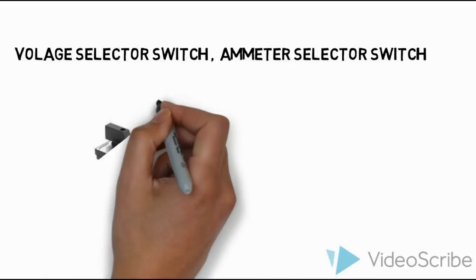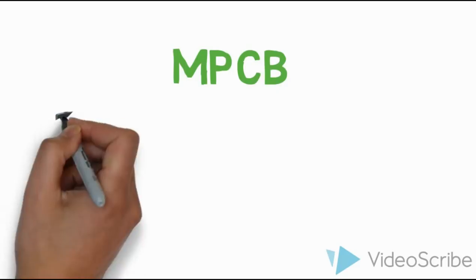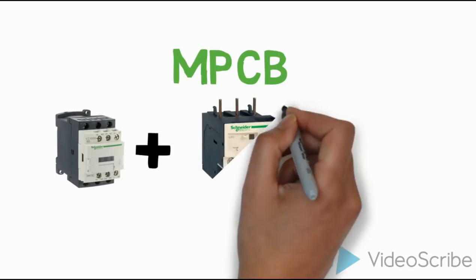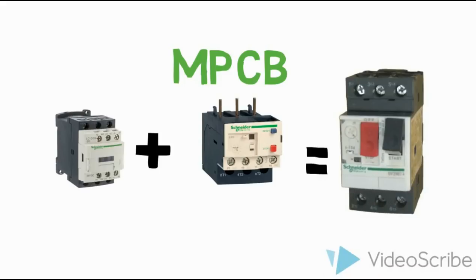Next is the MPCB — Motor Protection Circuit Breaker. MPCB combines a circuit breaker, contactor, and overload relay into one device. It provides all-around protection, on-off switching, trip indication, and trip function. The contactor handles on-off purposes and motor protection. A standard circuit breaker is not the same as an MPCB.